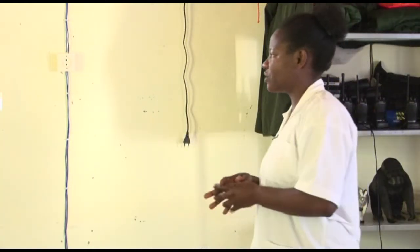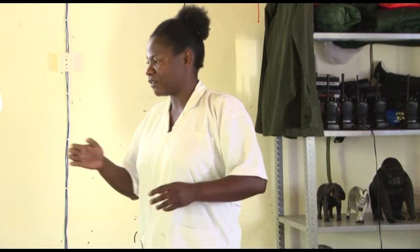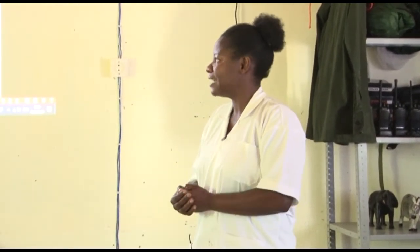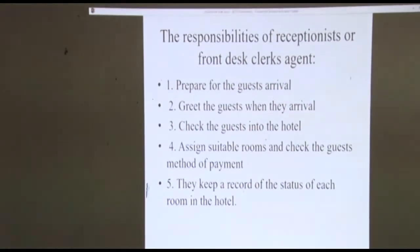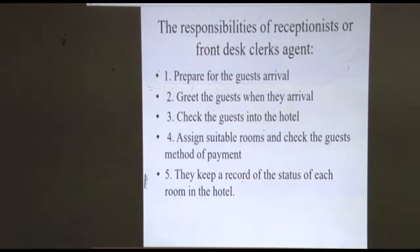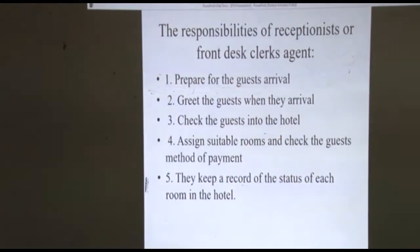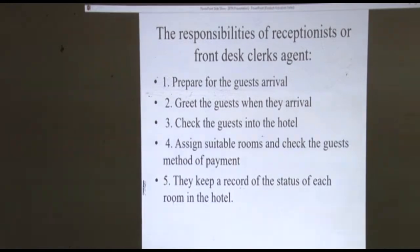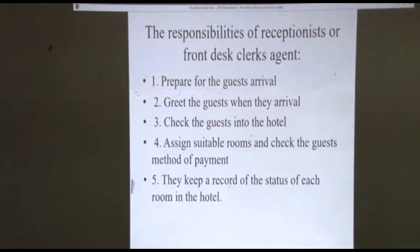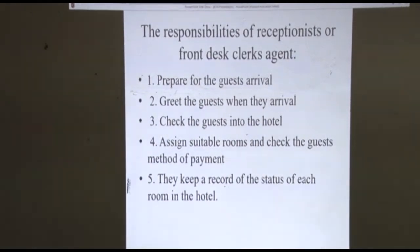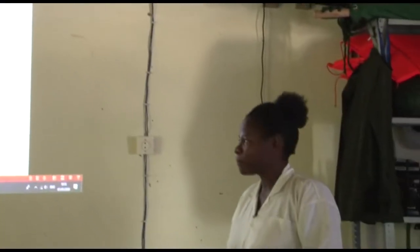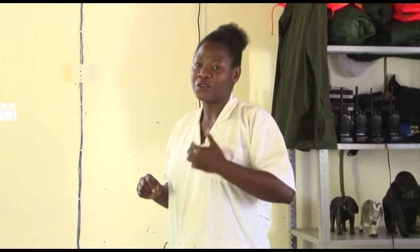The fourth responsibility is to assign suitable rooms and check the guest's method of payment. You have to have a POS machine, or they may pay by cash. You have to check how they will pay the amount. Then you assign suitable rooms according to the reservation made, giving a room that suits his or her comfort. Number five: keep a record of the status of each room in the hotel. As a receptionist, you have to be aware of room status — not giving out a room that is out of order, dirty, or not in working condition.